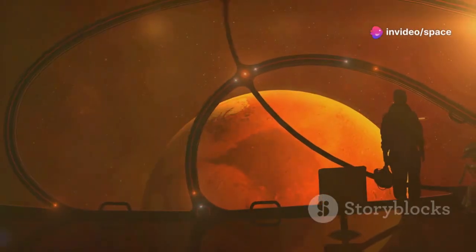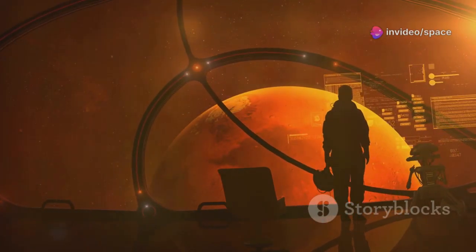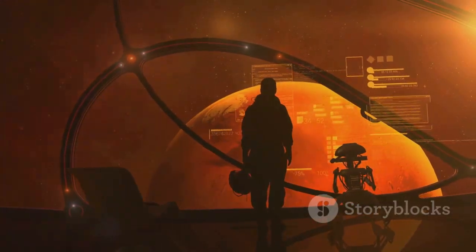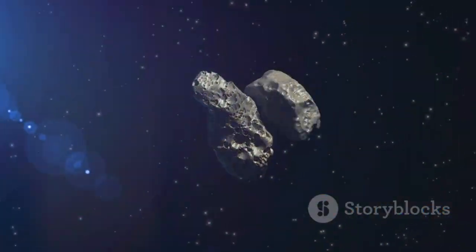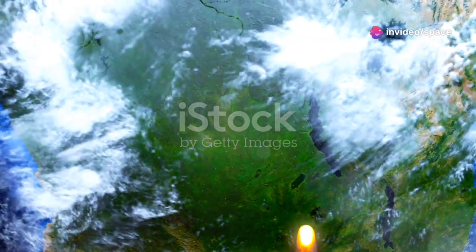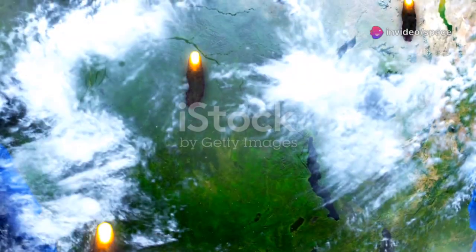The evidence was undeniable. Neptune had taken a direct hit from a massive object, leaving behind scars and a trail of debris. For the first time ever, humanity was witnessing a planetary collision as it happened, watching the universe's raw power reshape a distant world in real time. But the biggest mystery remained: what was this object that struck Neptune, and where did it come from?